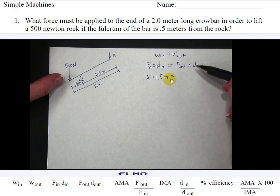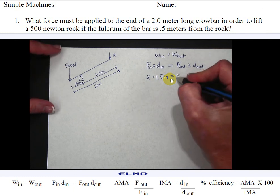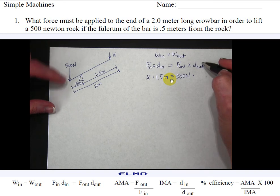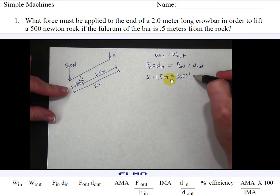The force out would be the output force which is the rock that we're going to try to move. It is 500 newtons times the distance out. The distance from the output force to the fulcrum is 0.5 meters.